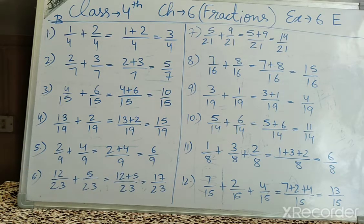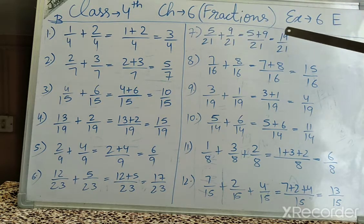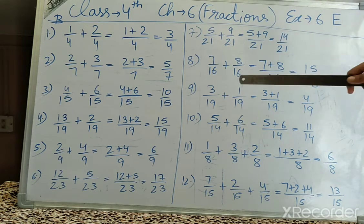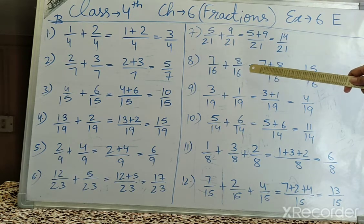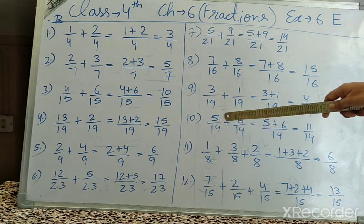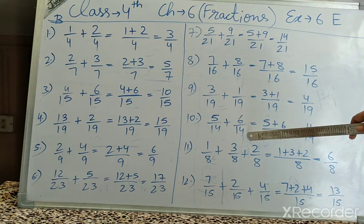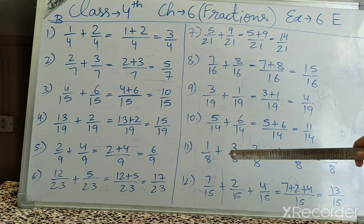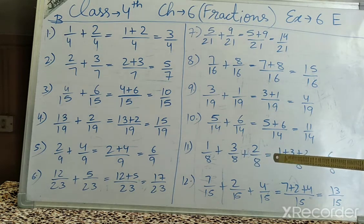If the denominator is the same, we keep the denominator and add the numerators on top. 5 plus 9 is 14 upon 21. 7 upon 16 plus 8 upon 16 gives 15 upon 16. 3 upon 9 plus 1 upon 9 gives 4 upon 9. 5 upon 14 plus 6 upon 14 — denominator same — 5 plus 6 is 11 upon 14.